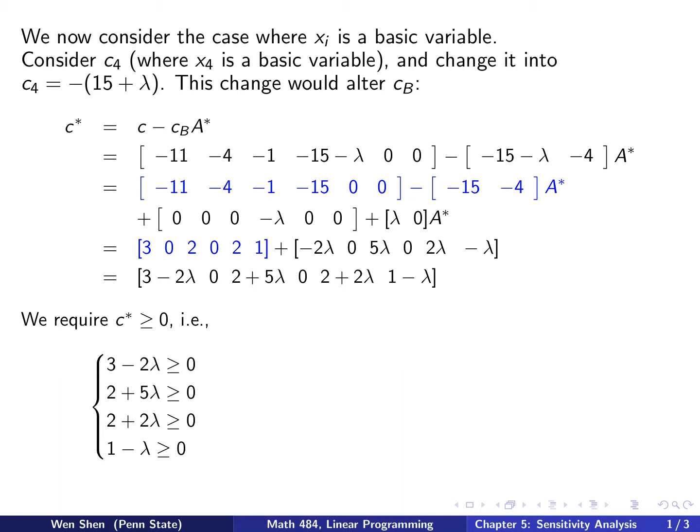And if I want to keep the final tableau final, that means satisfy the criterion for optimality, then the C star must be non-negative, which means each element here must be non-negative. So these 0 ones are obviously non-negative, but these terms containing lambda would have conditions. So let's list all these four terms. They are here, and we would require all of them to be bigger than or equal to 0.